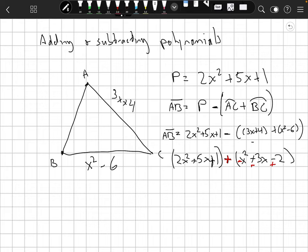So 2x squared minus x squared, that'll give you x squared. And 5x minus 3x, that'll give you 2x. And 1 plus 2, that'll give you 3 right there. So x squared minus 2x plus 3.